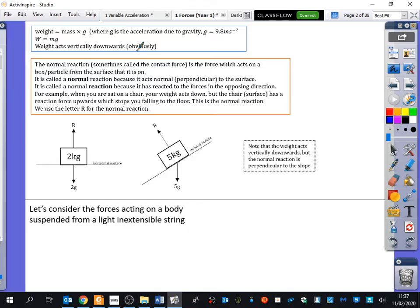G is sometimes 10, but most of the time we'll call it as 9.8. So I'm just going to read this out again. The normal reaction, which is sometimes called the contact force or the reaction force, is the force which acts on a box or particle from the surface that it is on. It's called a normal reaction because it acts perpendicular to the surface.